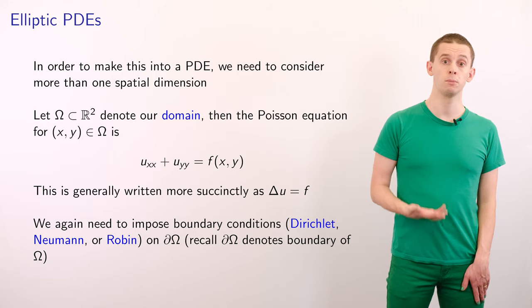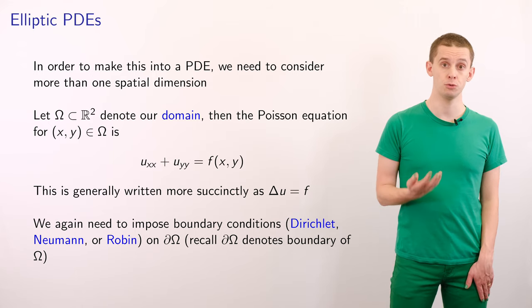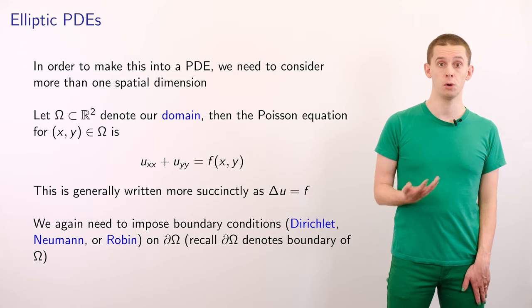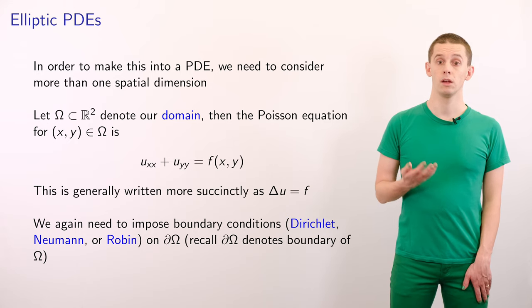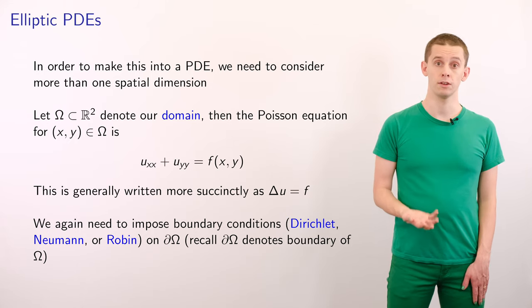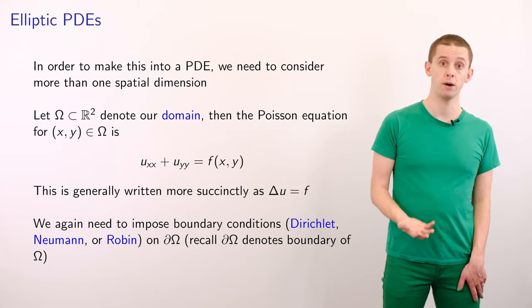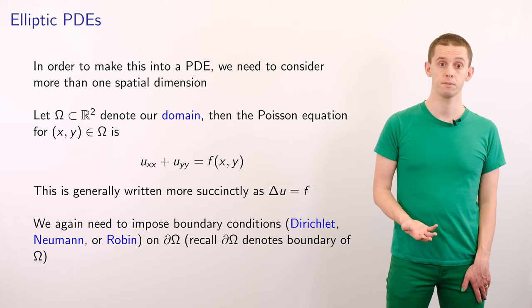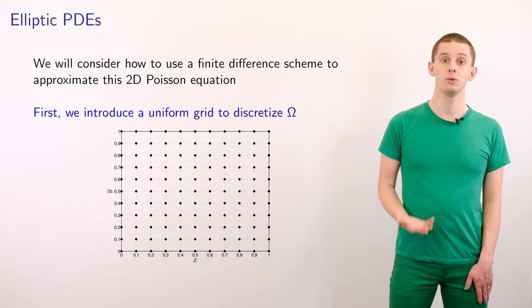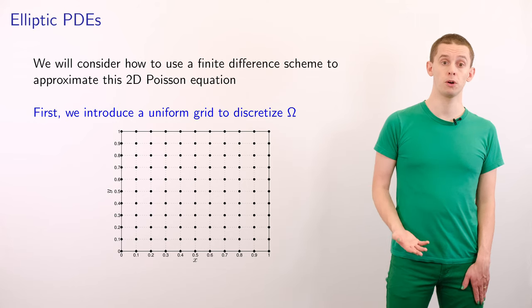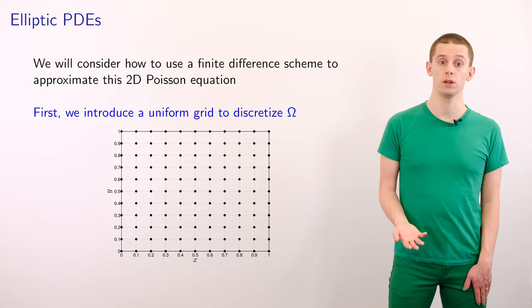And again, we'll need to impose boundary conditions, either Dirichlet, Neumann or Robin, on d omega that is defined as the boundary of omega. So we'll consider how to use a finite difference scheme to approximate the 2D Poisson equation.